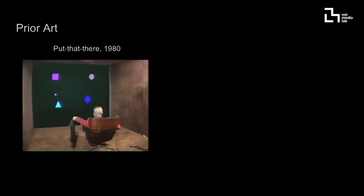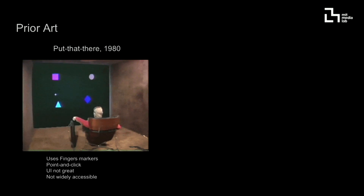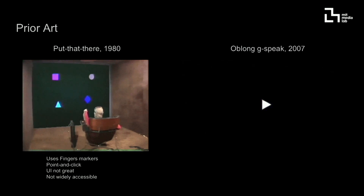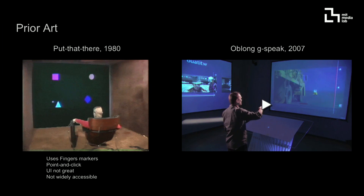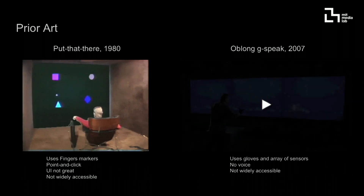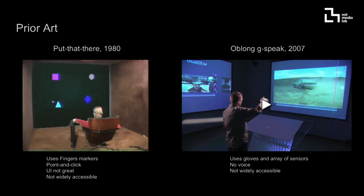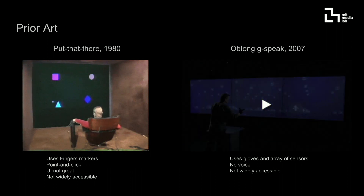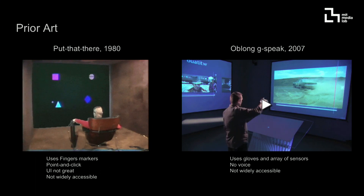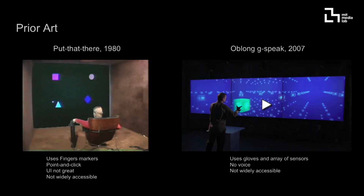When I came to the Media Lab, I saw so many large screens and thought, I don't want to use a controller to manipulate the data all the time. I did some research: in 1980, there was a project called Put That There, which also came out of the Media Lab. It used fingers as markers with a point-and-click methodology, but the UI was primitive and wasn't widely accessible — more of a research project. Then John Undercoffler invented G-Speak in 2007, which was more advanced. He used gloves to interact with content, but this interface required many sensors, didn't leverage multimodal inputs like voice, and wasn't widely accessible. Yet it pushed the boundaries of interaction beyond just keyboard or mouse.